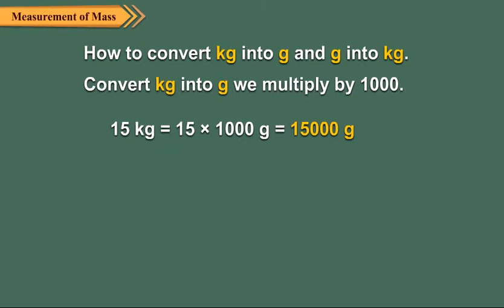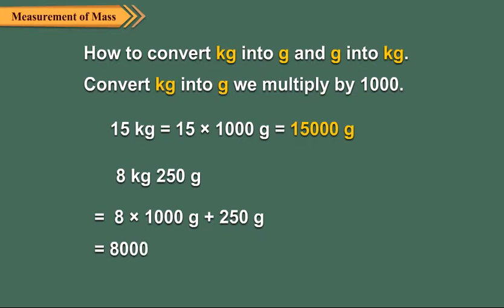To convert 8 kilogram 250 grams into gram, we first multiply 8 by 1000 to get 8000. Then, we add 250 to 8000 to get 8250 grams.